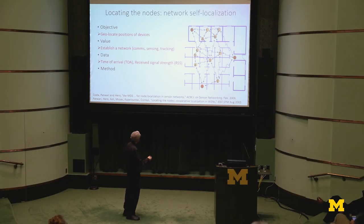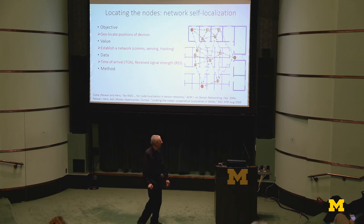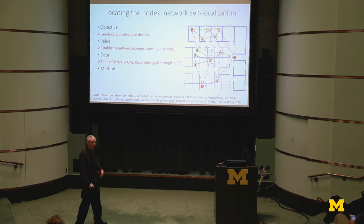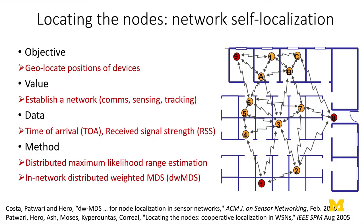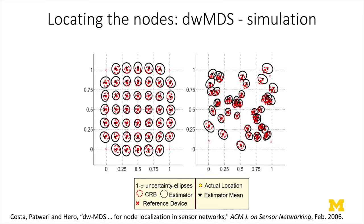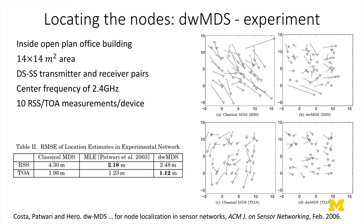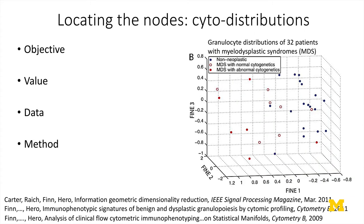There are methods we've developed and published — these are my two most cited papers with several thousand citations — that appeared as Internet of Things and other types of localization technology were being developed. I want to get quickly to the more current work of locating nodes in high dimensions, where we can relate location directly to an outcome which, in the examples I'm going to show, are health-related.